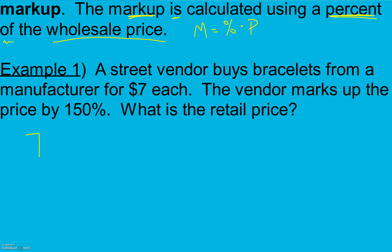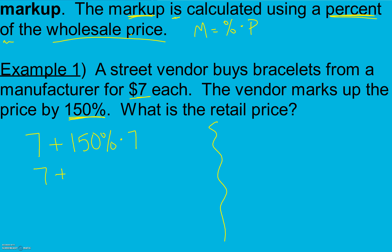The street vendor bought it for seven dollars. We're going to have to pay that original seven dollars. There are two different ways we can do this problem. They're going to mark up the price by 150 percent because they want to make money, so they take 150% of the wholesale price, which is seven dollars. Moving the decimal two places gives us 10.50, plus that original seven dollars. The 10.50 is the markup, so the retail price is $17.50.